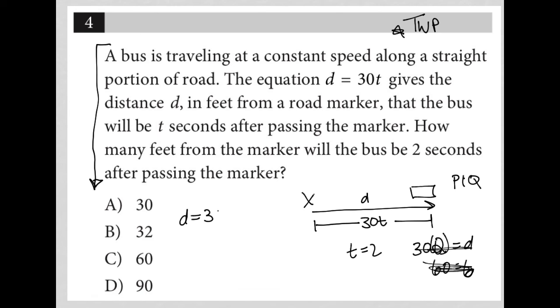d is equal to 30t. d, therefore, is equal to 30 times two. Therefore, d is equal to 60. So my correct answer here is choice C.